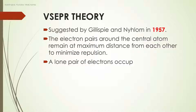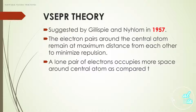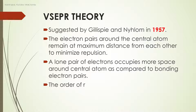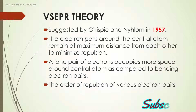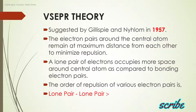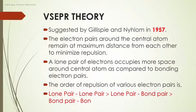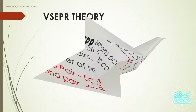A lone pair of electrons occupies more space around the central atom compared to bonding electron pairs. The order of repulsion is: lone pair–lone pair repulsion is maximum, greater than lone pair–bond pair, which is greater than bond pair–bond pair repulsion.